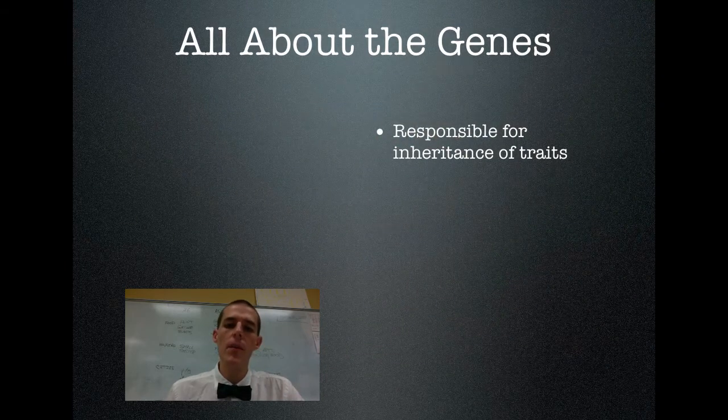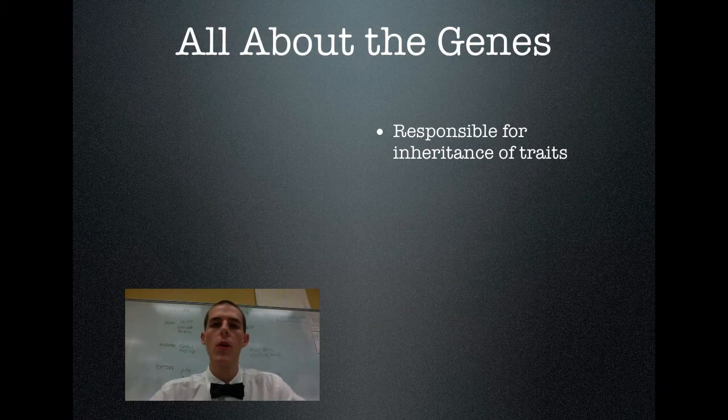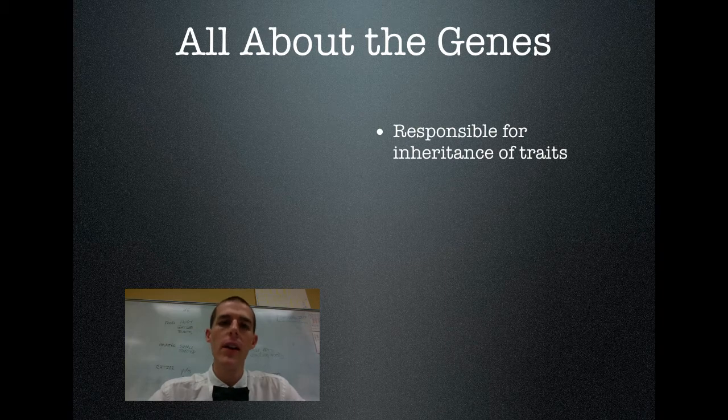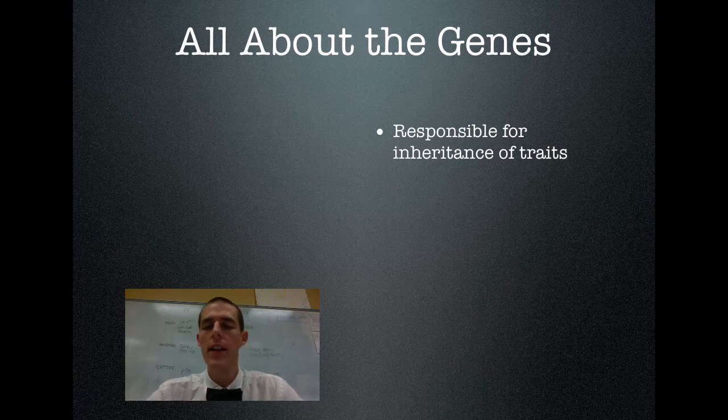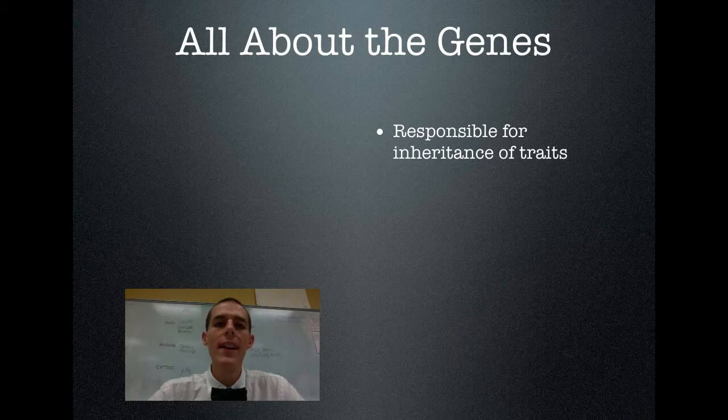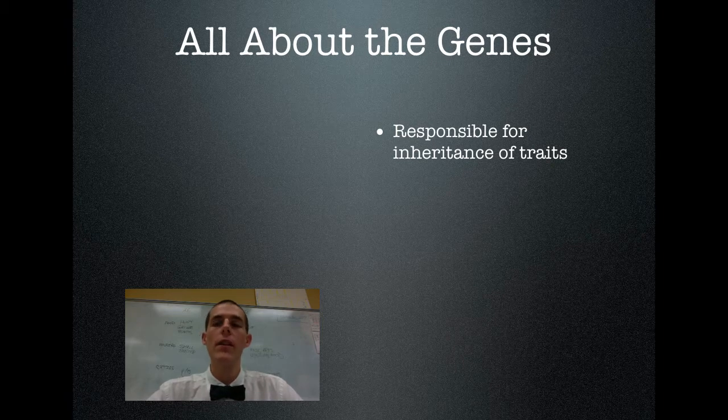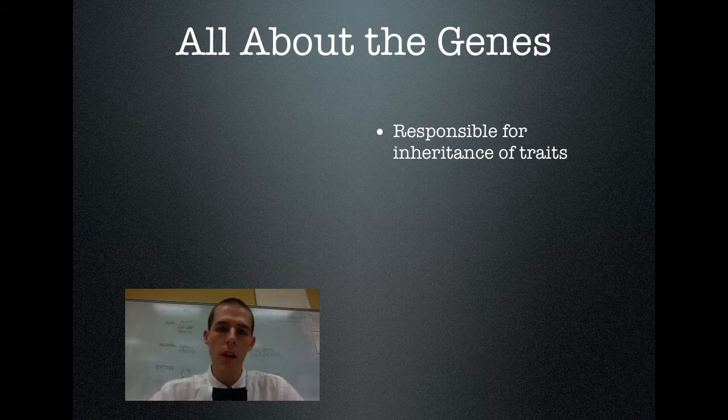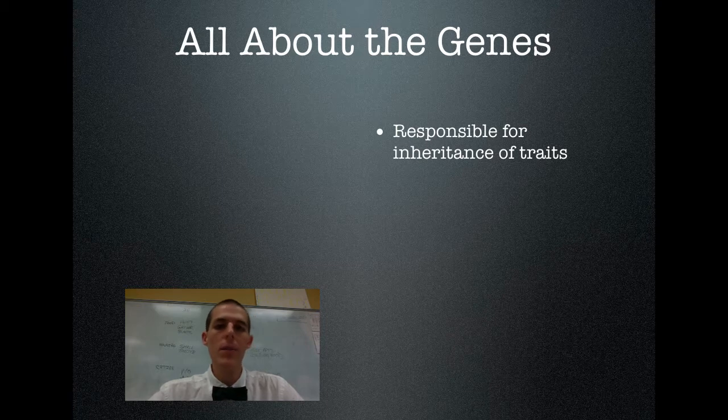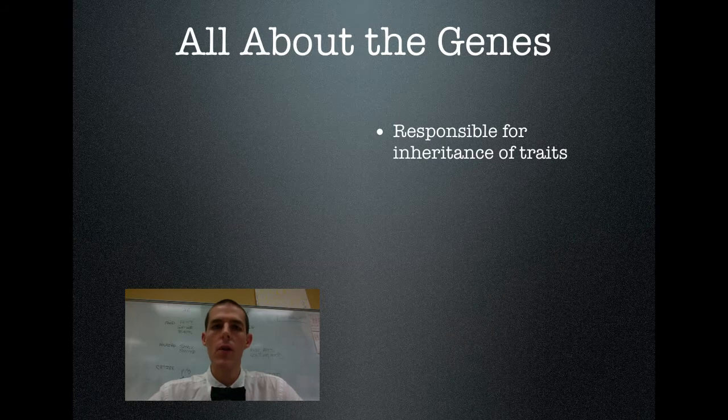So first thing that you need to know is that genes are responsible for the inheritance of traits. If you ever hear that you've got mom's eyes or dad's nose or whatever else, obviously they didn't give you their eyes or their nose. They gave you a trait that gave your body the ability to produce those eyes or nose or whatever. You can kind of think about it as what your brain does when you read a book. So you're reading through a book and you see the word dog. Your brain conjures up an image of a dog. In the same way are genes, which are code, so they are a sequence of bases, ACTG.